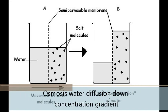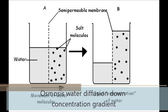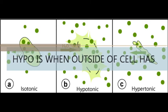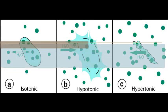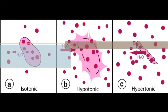Osmosis is water diffusion down concentration gradient through membrane structure. Hypotonic is when outside of cell has more water. Hypertonic, you gotta translate backward.